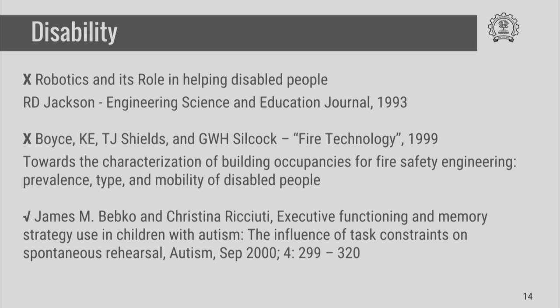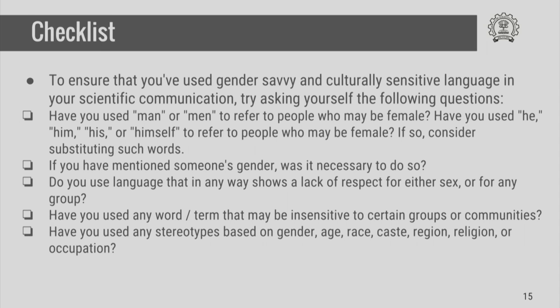These are the different kinds of best and worst practices we should be aware of in our communication as far as gender, age and disability are concerned in scientific communication. Just as we all have different kinds of checklists while we communicate — when preparing a report or a presentation — I suggest that each of you also prepare a checklist to see if you are gender-savvy and culturally sensitive in all your presentations, and ensure that you avoid worst practices and adhere to best practices. This is the end of the presentation. Thank you.